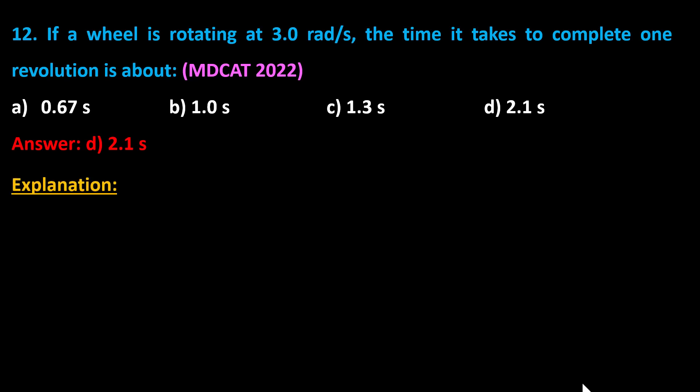Explanation: The angular displacement of a body rotating with angular velocity omega is given by theta equals omega t. Therefore, t equals theta over omega.